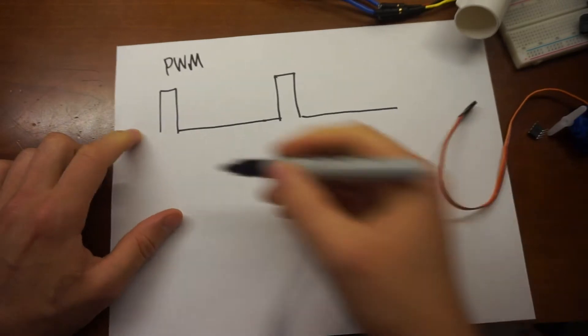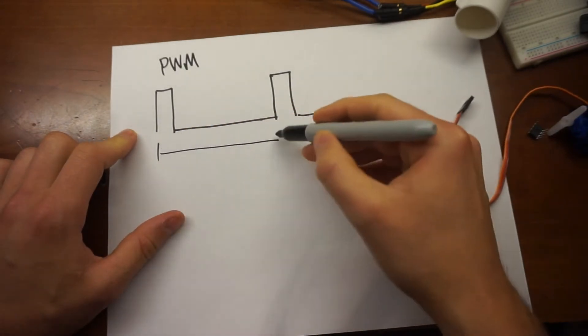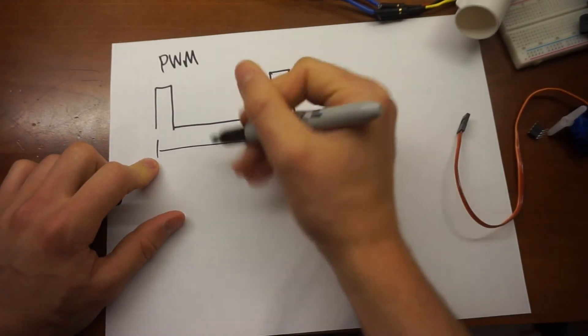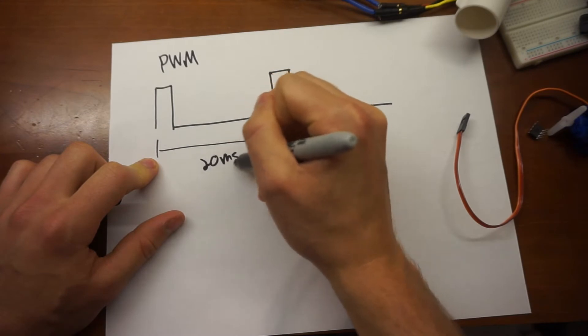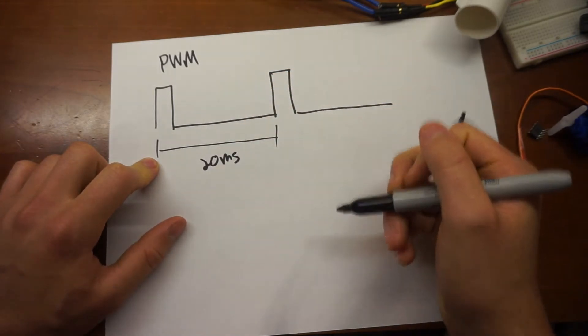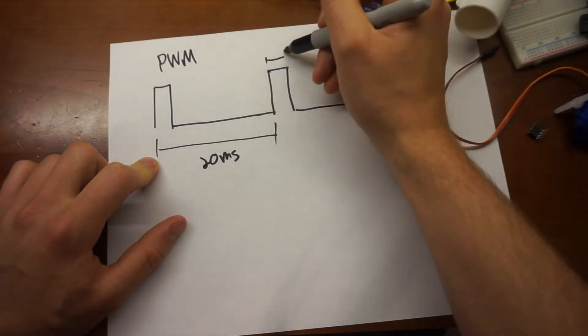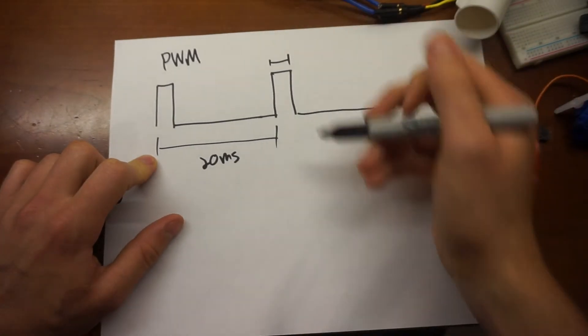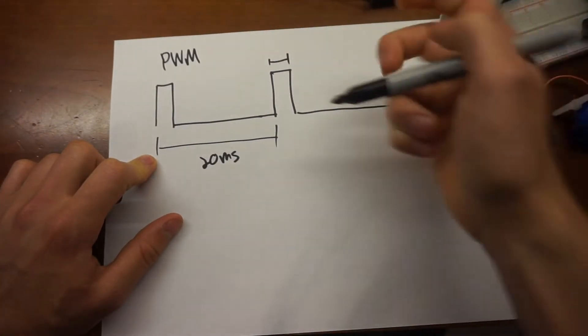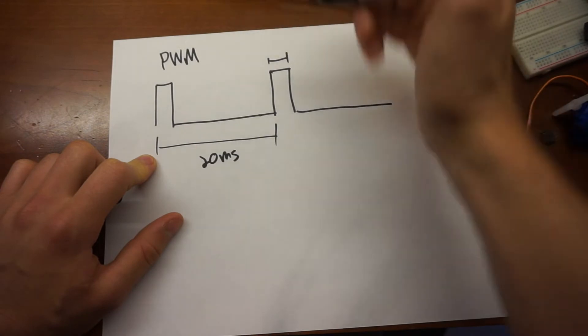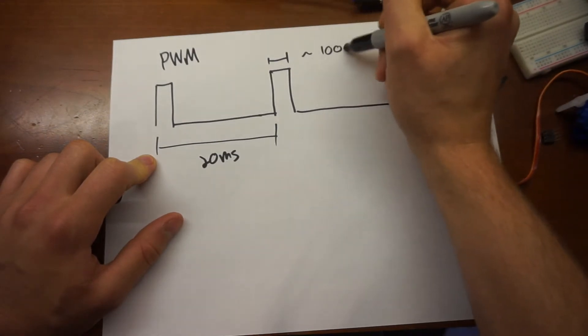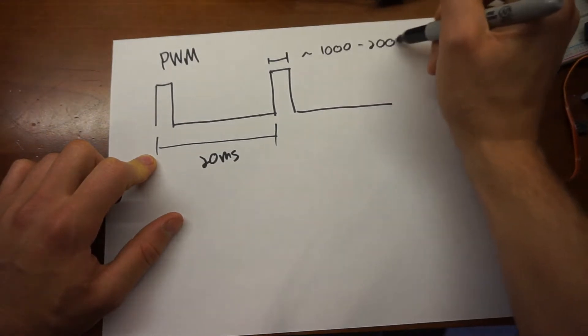And it has a period, a full end-to-end period of 20 milliseconds. And this little guy in here is the actual control pulse. And for stuff like this, for stuff like the ESCs, it ranges from about 1,000 to 2,000 microseconds.